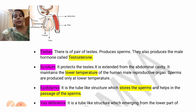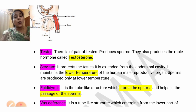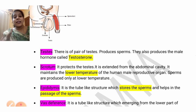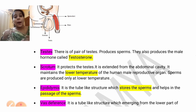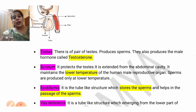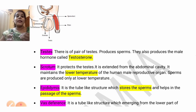The second part is the scrotum. The scrotum is a bag-like structure that protects the testes. Why is it outside the abdominal cavity? For the production of sperm, the testicles need a lower temperature. The temperature inside the body is higher compared to the temperature in the scrotum. That is the reason the scrotum is present just below the abdominal cavity.